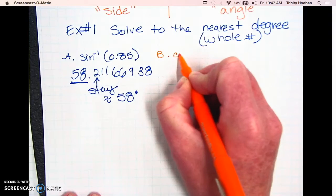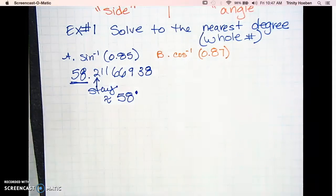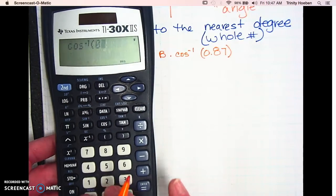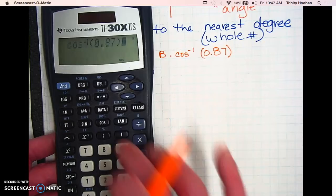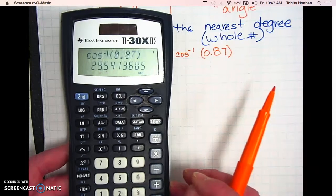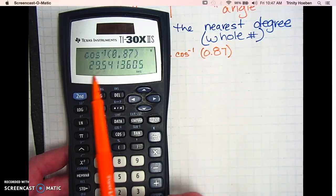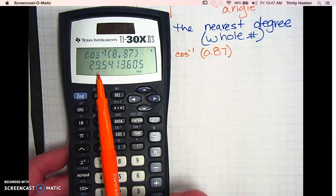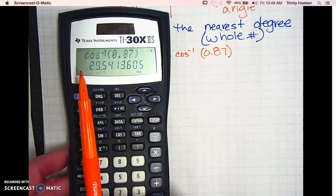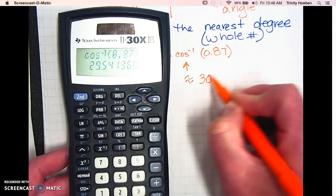Let's try it with cosine: the inverse cosine of 0.87. Hit second, then the cosine button, type in 0.87, and hit the equal sign. The calculator displays 29.54 and then more numbers. The whole number part is 29, and right after the decimal is a 5, so this one rounds up. It is approximately 30 degrees.